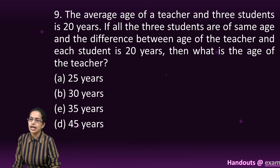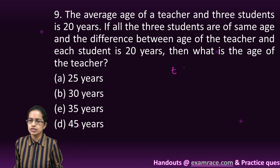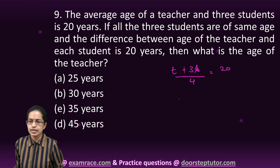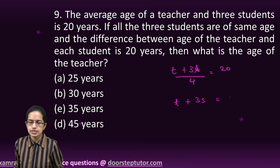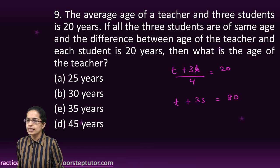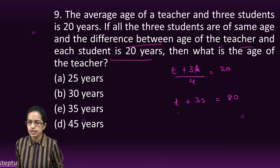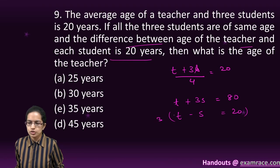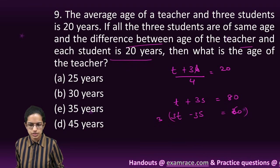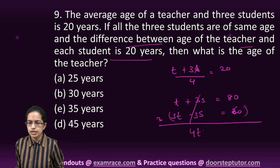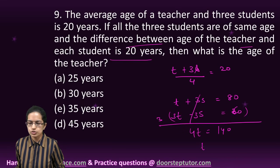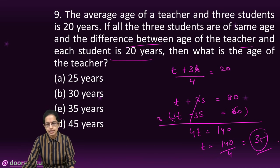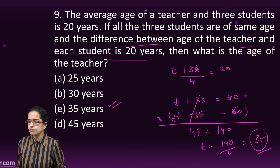The next question: the average age of a teacher and 3 students, total 4 people, is 20. That means T plus 3S equals 80. The difference between the teacher's age and student's age is 20, so teacher minus student equals 20. I multiply this by 3, getting 3T minus 3S equals 60. Solving, 4T equals 140, so the teacher is 35 years old.